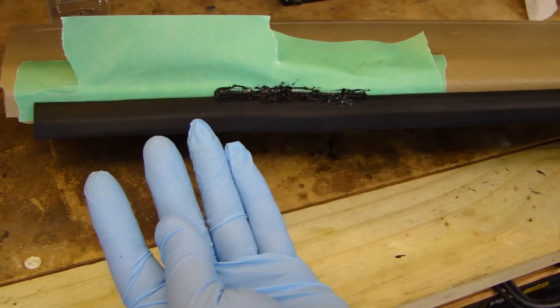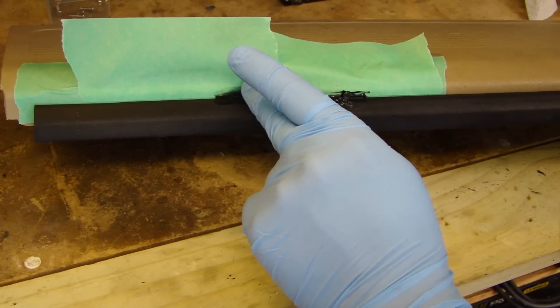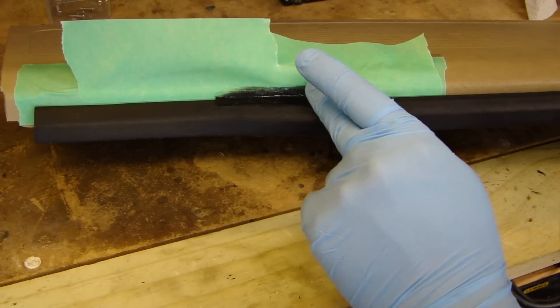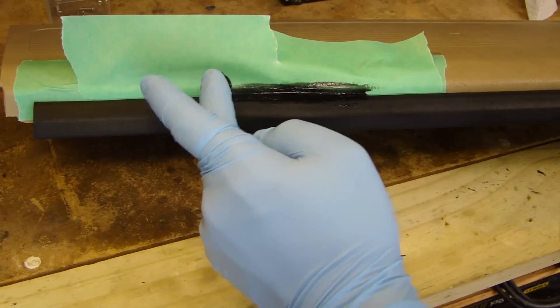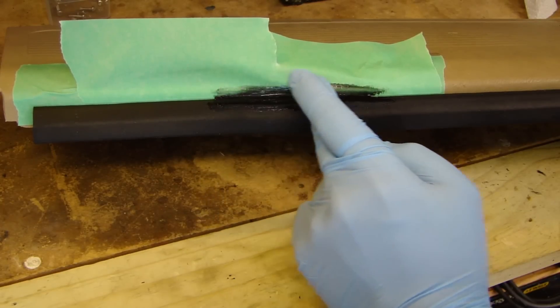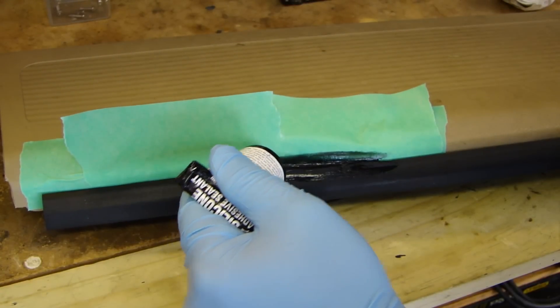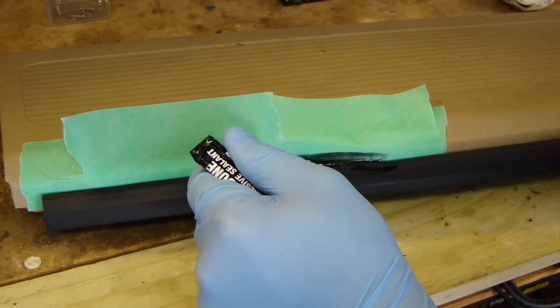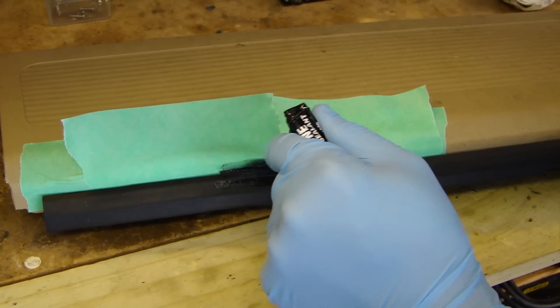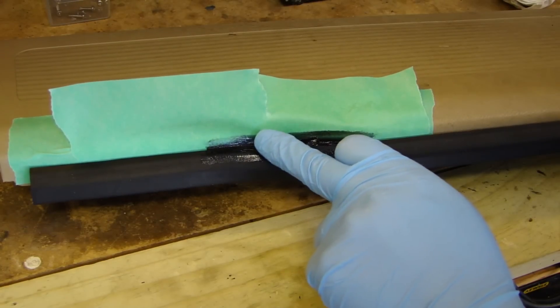The next thing is to put on your latex glove and gently run your finger across this edge right here and just smooth it out. If you find that some of the area needs more silicone, just go ahead and squeeze more on top. It's easy to work with this, and again, just smooth it out.